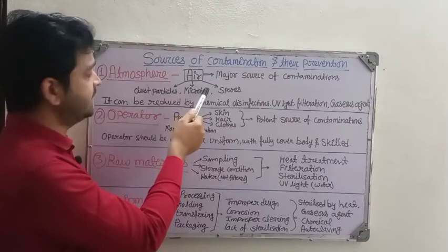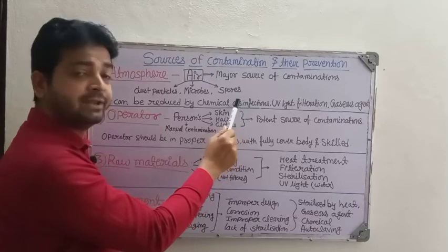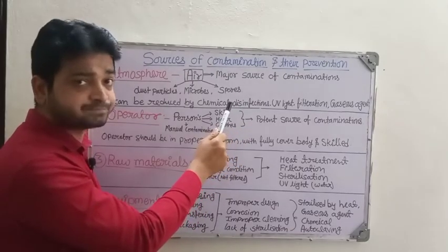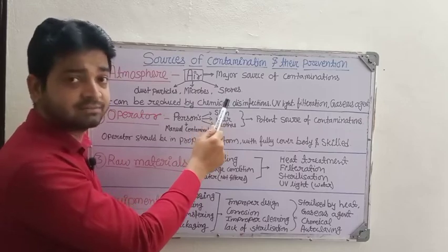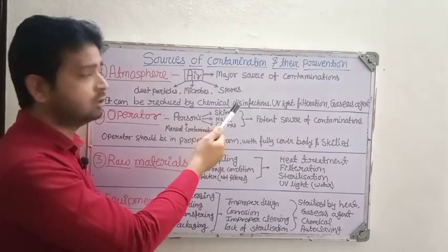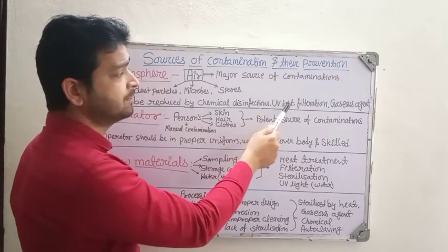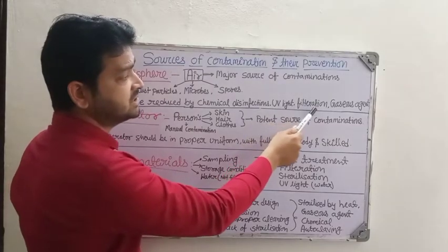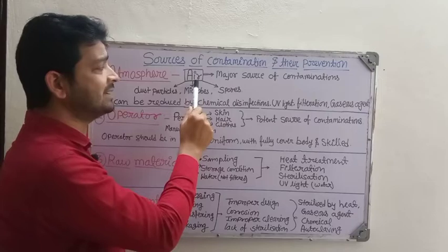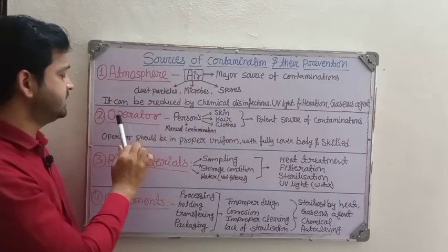To reduce atmospheric contamination, chemical disinfection can be done using agents we have studied — alcohol, different types of dyes, detergents, aldehydes, phenolic compounds, and UV lights. Filtration can also be done, and different gaseous agents can be used to make the air filtered and clean.